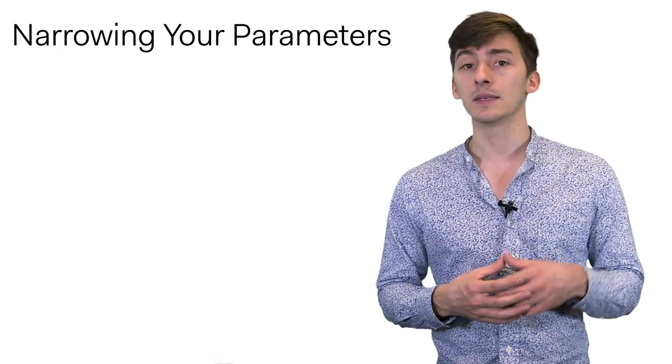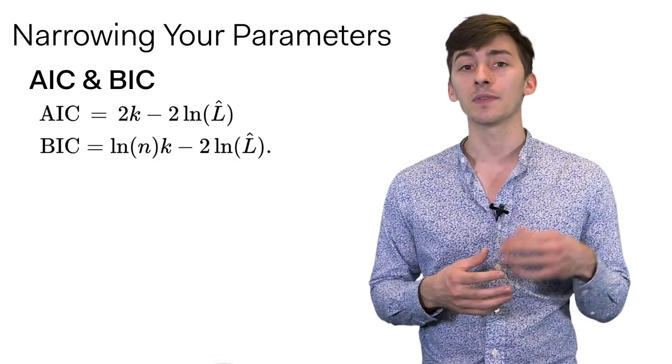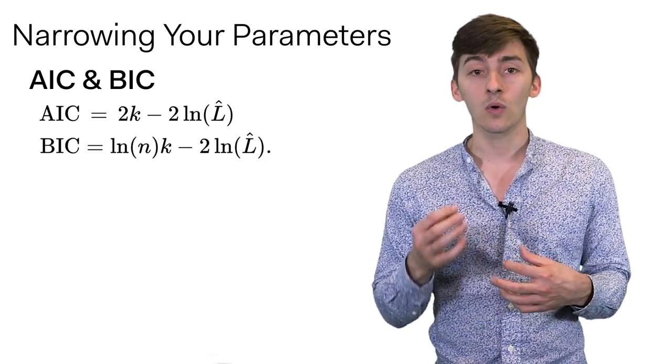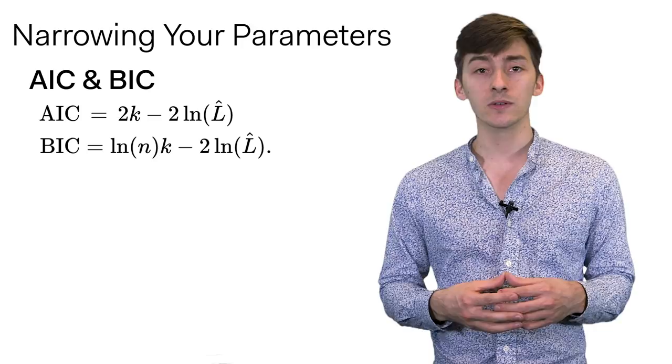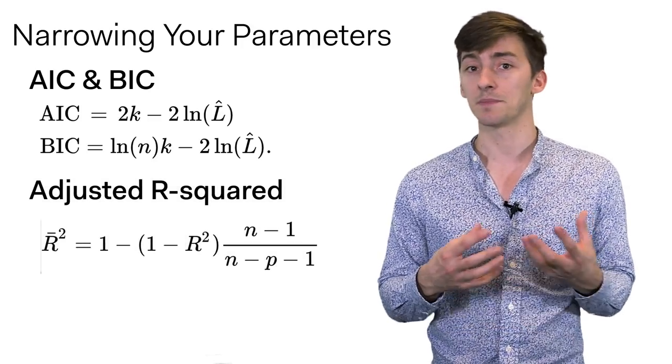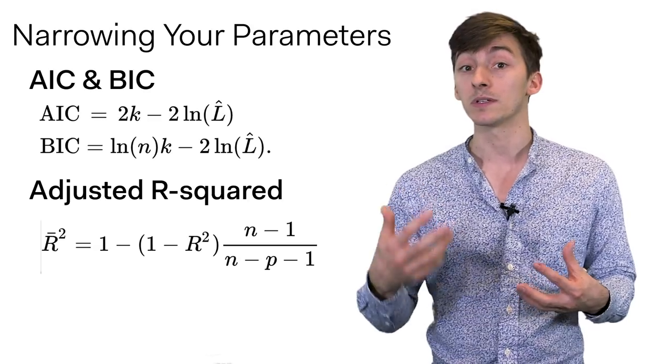These are criteria like the AIC or the BIC, which are metrics based on the likelihood of your model that incorporate a penalty based on how many parameters you have. You can also use the adjusted R-squared, which takes our base notion of R-squared and adjusts it by the number of parameters in your model.